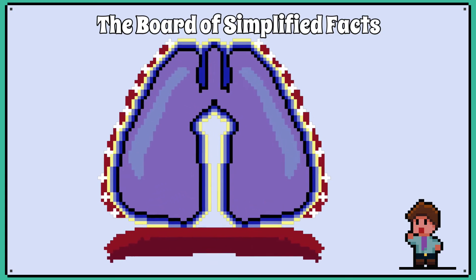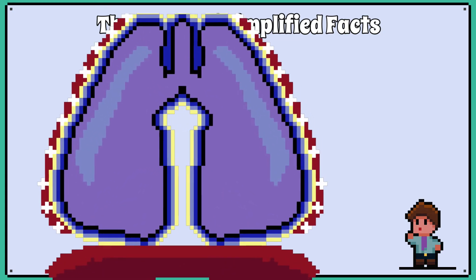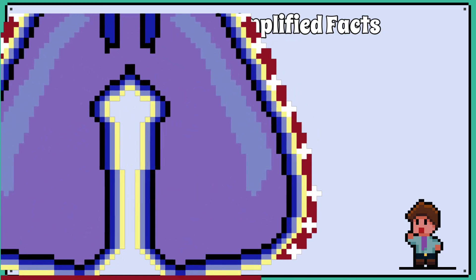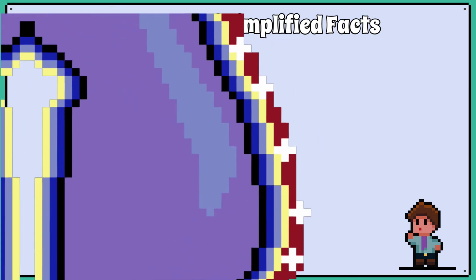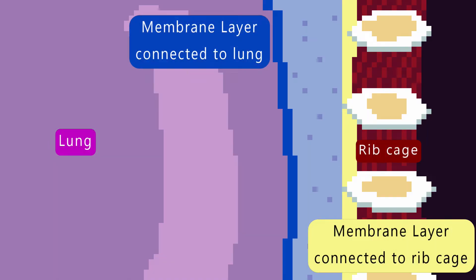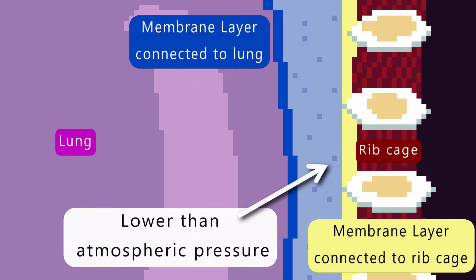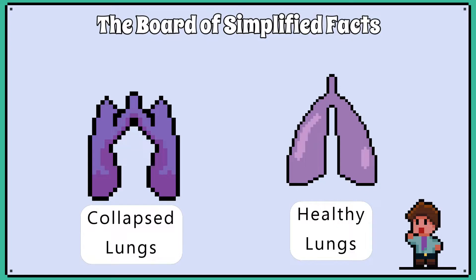The lungs are surrounded by a membrane folded over itself to make a space filled with fluid. It is connected to the lungs and the thoracic walls. The pressure in that space is less than atmospheric pressure, so the lungs are always a bit inflated.